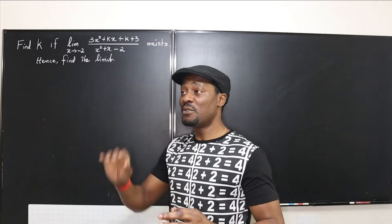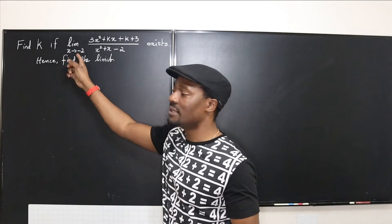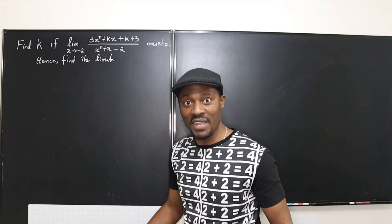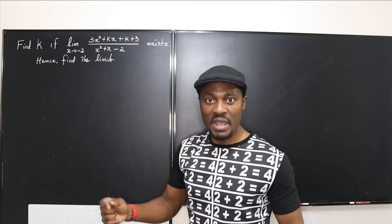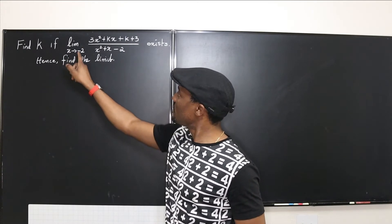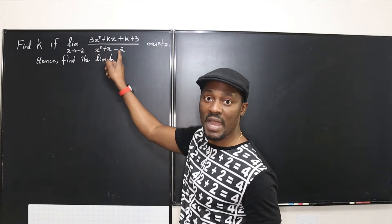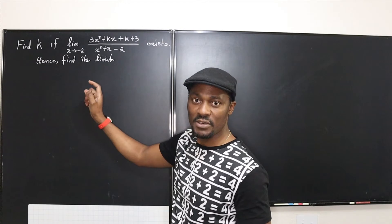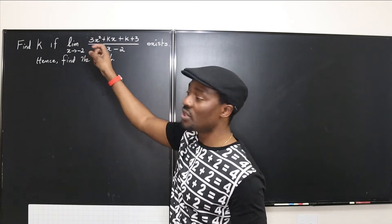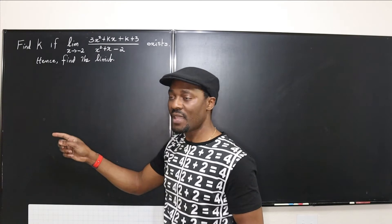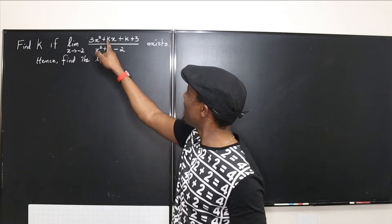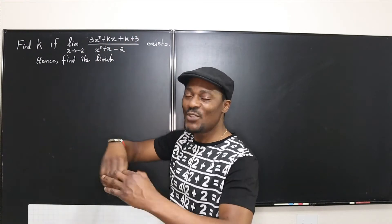The first thing you must understand is that for a rational expression to have a limit as x approaches a constant, the expression must be defined. The first step is to try direct substitution, but when you substitute x = -2 you get (-2)² - 2 - 2 = 0 in the denominator, so you'd be dividing by 0. The only way to solve this is to factor the denominator and find a matching factor in the numerator to cancel — but we can't factor the numerator yet because we don't know k.